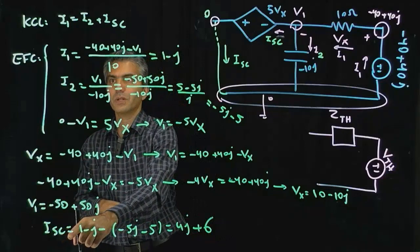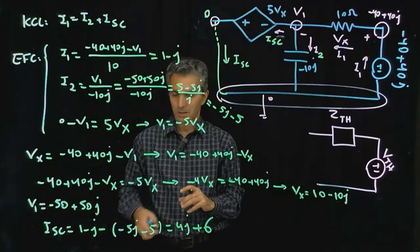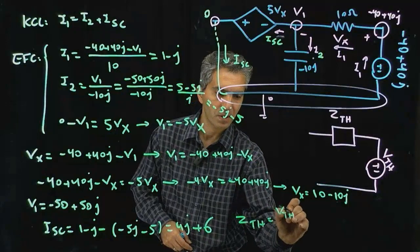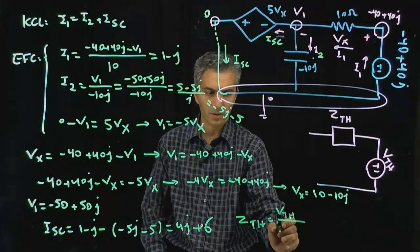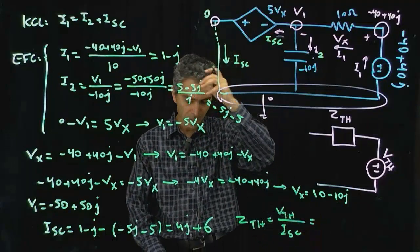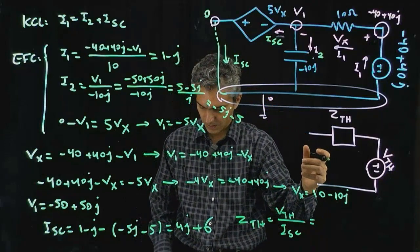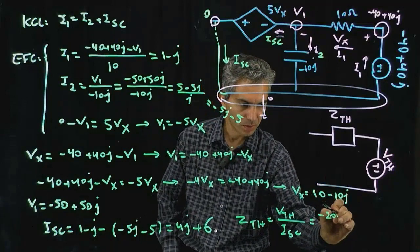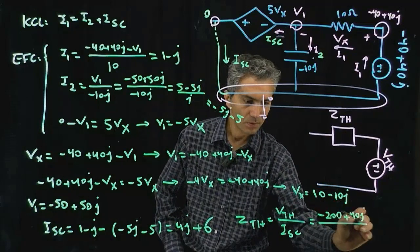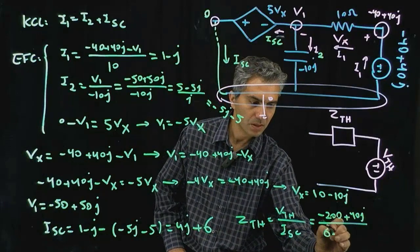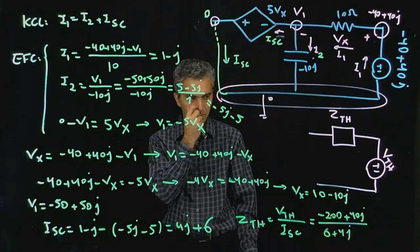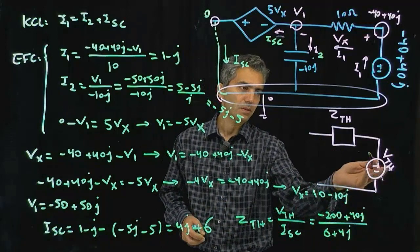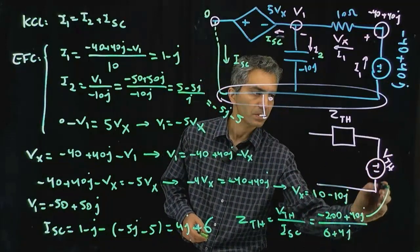Now, we have I short circuit, we calculated VThevenin earlier. So, ZThevenin is basically VThevenin divided by I short circuit. Now, VThevenin that we calculated was minus 200 plus 40J divided by I short circuit, which is 6 plus 4J. And this is our ZThevenin, and you put it there. You can actually simplify it if you want to. And that's VThevenin right here, where it says VThevenin.